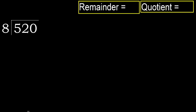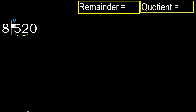520 divided by 8. 5 is less, therefore look at 52. 52 is not less, so find what number multiplied by 8 is nearest to 52 but not greater. 8 multiplied by 7 is greater, so try 8 multiplied by 6: 48 is not greater. Subtract: 52 minus 48 is 4.